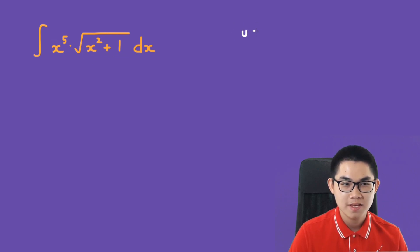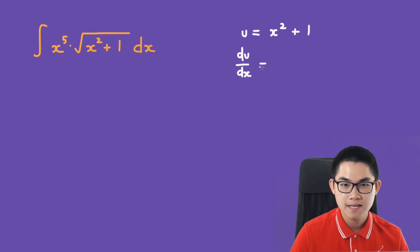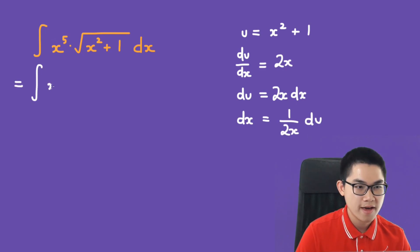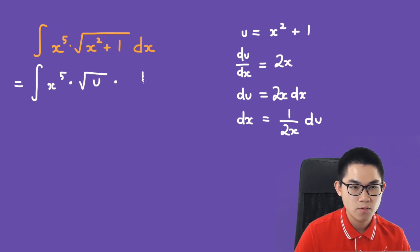Let u equal x squared plus 1. Then du/dx is 2x, so du is 2x dx, and dx is 1 over 2x times du. Substituting, we have the integral of x to the power of 5 times the square root of u, times 1 over 2x du.